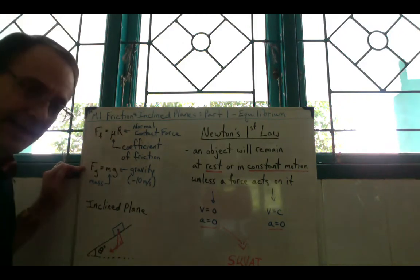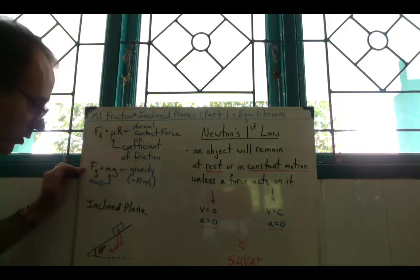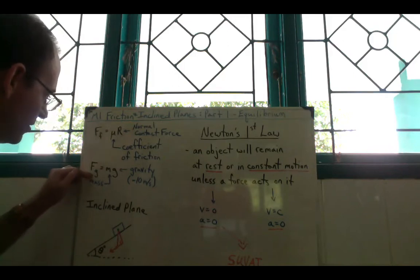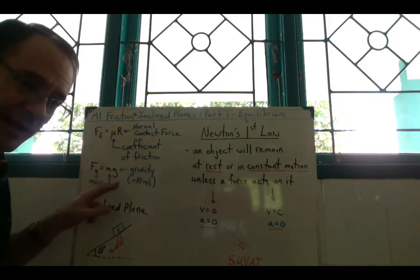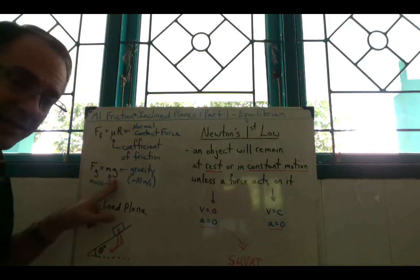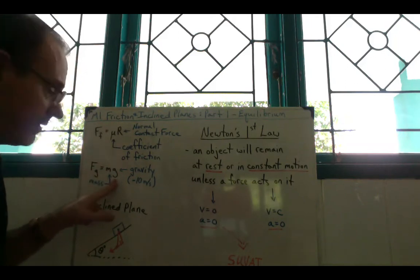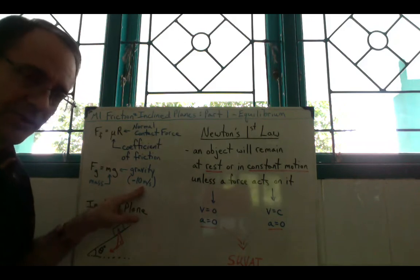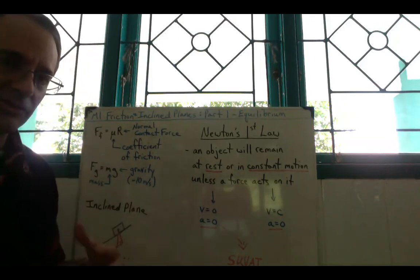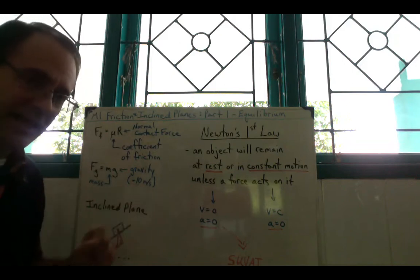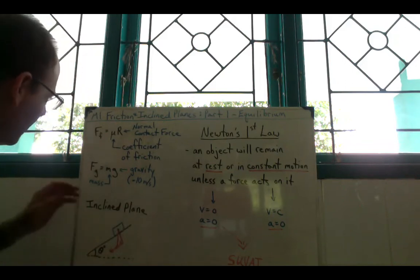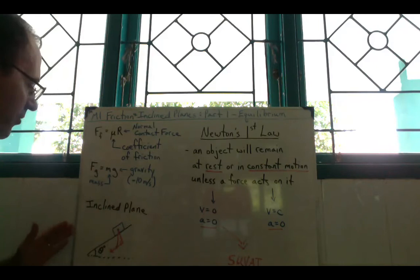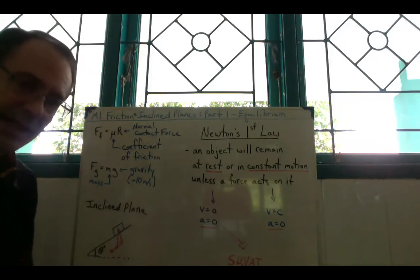Another formula we'll be working with is force due to gravity: mass times gravity. The acceleration due to gravity in the Cambridge mechanics book is negative 10, so if you're used to negative 9.8, you don't have to use that — you can use negative 10. These are two additional formulas, and we also throw in the concept of an incline plane.